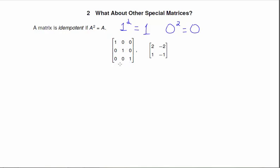The identity squared is still equal to the identity, so that is idempotent. And here's another idempotent here.